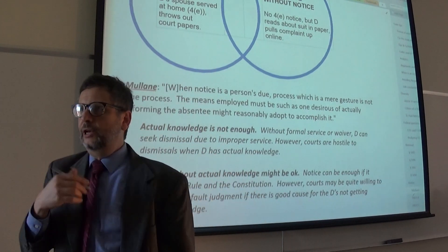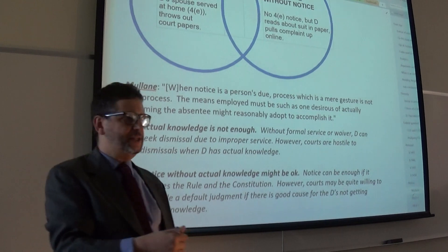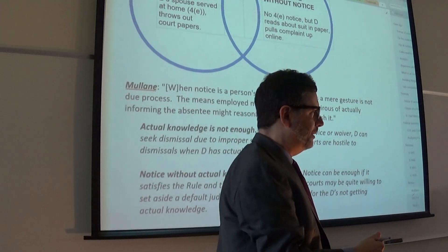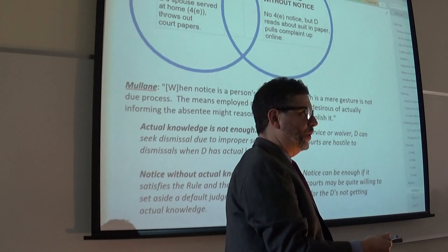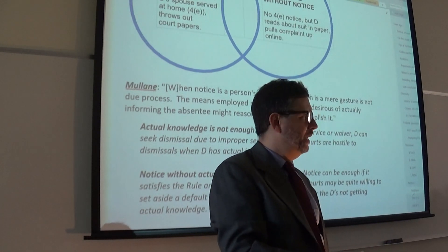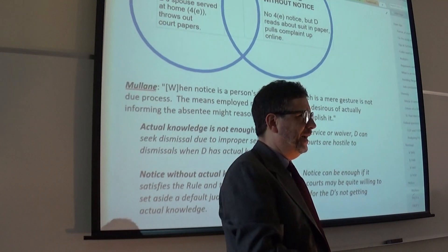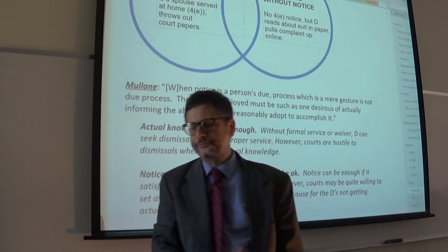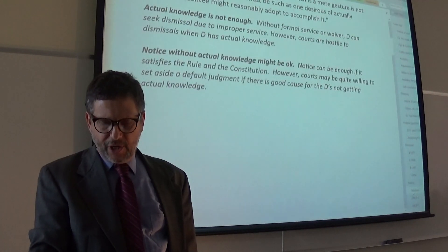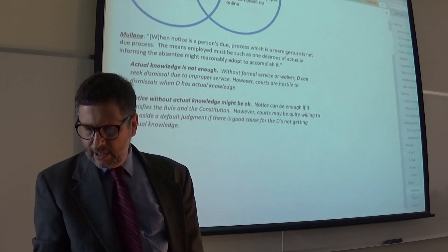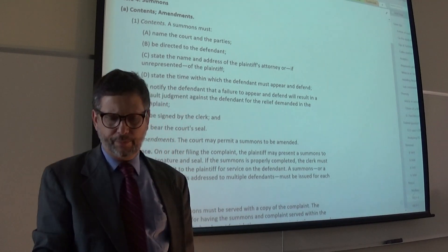Here's another example. In notice, you've got to satisfy both the Constitution — that's Mullane — giving notice calculated towards giving actual knowledge, even if actual knowledge doesn't ensue. It's got to be reasonably calculated towards that. But it's not enough to satisfy just the Constitution. You also have to satisfy a relevant rule.